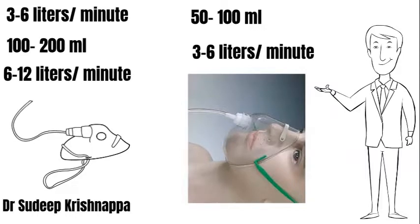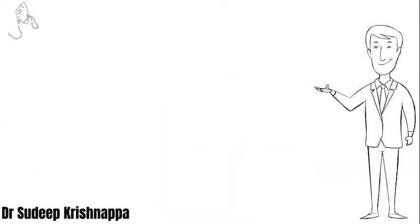This means a flow of 3 to 6 liters per minute would be enough to prevent rebreathing by washing out exhaled gases accumulated under the mask from the previous expiration. So 3 liters per minute equals 3000 mL per 60 seconds, translating to about 50 mL per second. Similarly, 6 liters per minute translates to 100 mL per second.